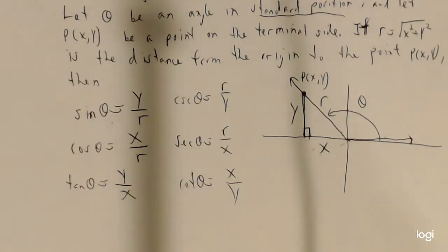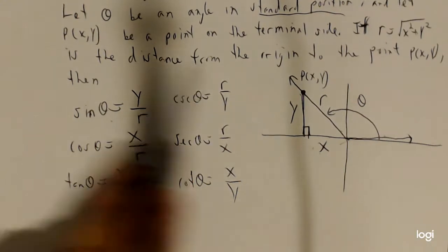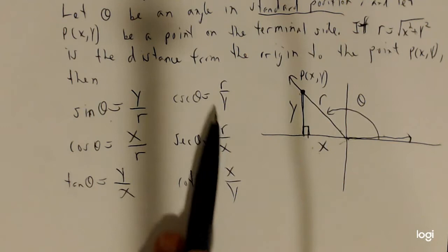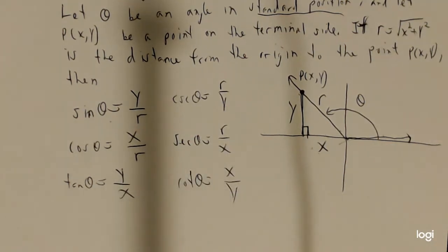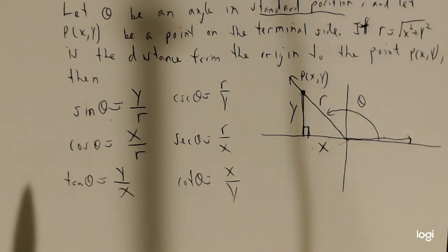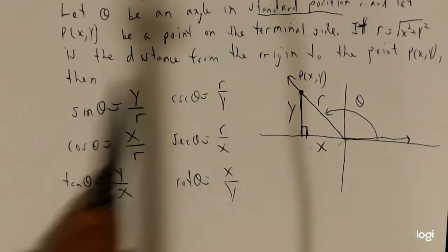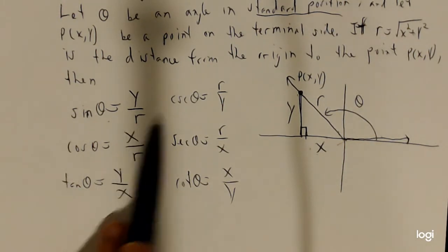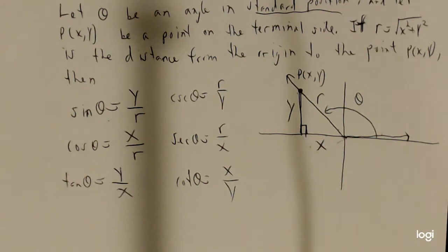Notice how tangent is y over x and cotangent is x over y — R is now popping up because we don't necessarily have a unit circle. Comparing to Chapter 5, we said sine was just y and cosine was just x. Now it's y over R and x over R. In Chapter 5 we used a unit circle, which means R was 1, so y over 1 is just y. Now we're saying R doesn't have to be 1 — but if it were a unit circle, these definitions reduce to exactly what we had before.